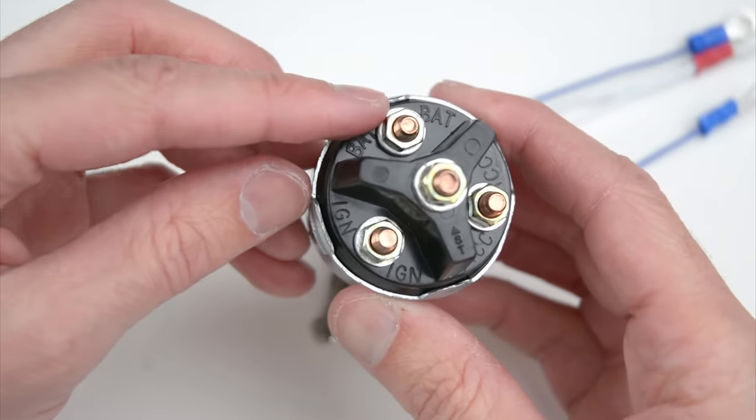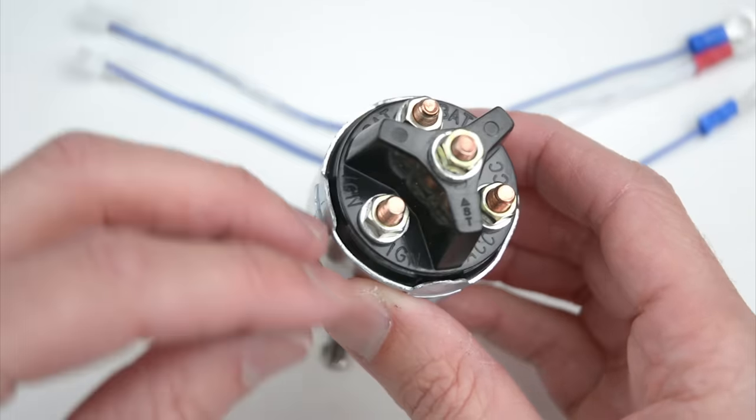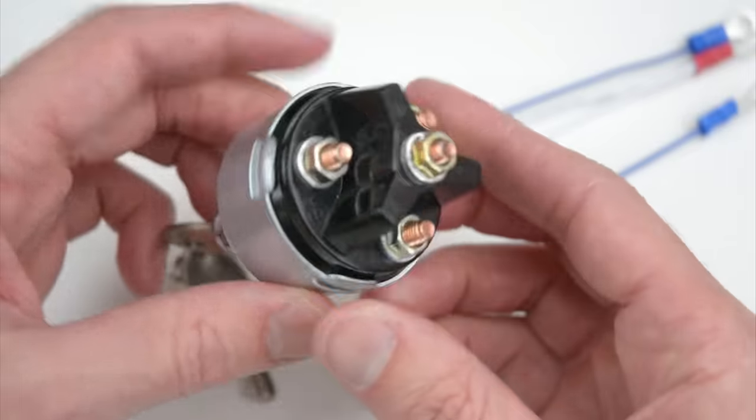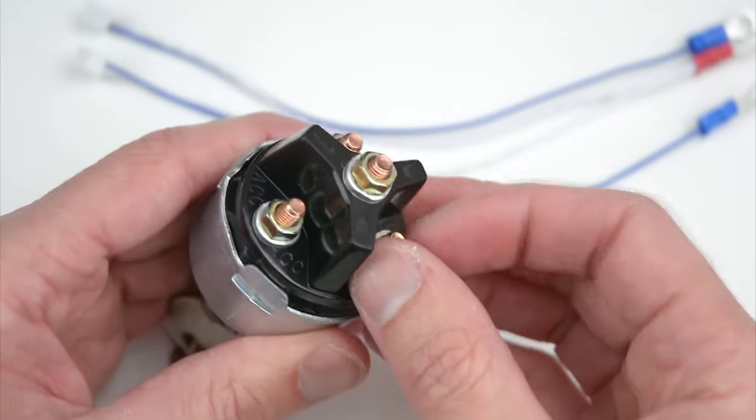On the back of the switch, we can connect to the battery, the ignition, and start terminals. The fourth terminal is for the accessories and will not be needed in this example.